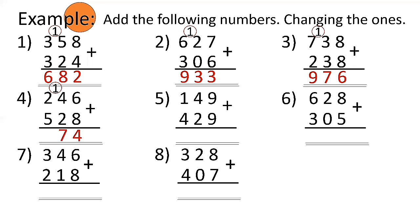Number 5: 129 plus 449 — 9 plus 9 is 18, bring down 8, carry 1 to the tens place. 4 plus 2 is 6 plus 1 is 7 in the tens. 1 plus 4 is 5 in hundreds. Answer is 578.